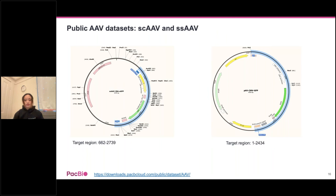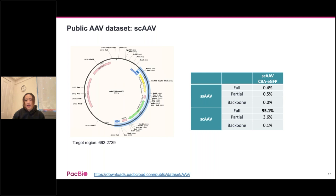For the remainder of the talk, I'll focus on two public data sets and a collaborating customer data set. We purchased two commercially available vectors — one self-complementary and one single-strand. For the self-complementary AAV, the majority of reads — 95.1% — are considered full self-complementary AAV structures, meaning they go from ITR to ITR and form the desired self-complementary structure.